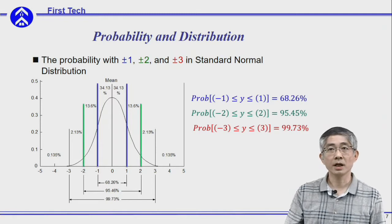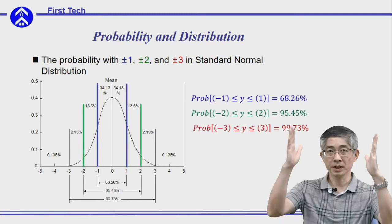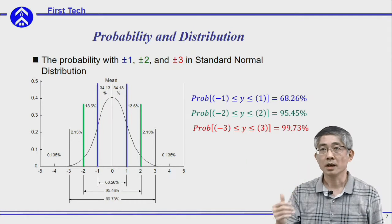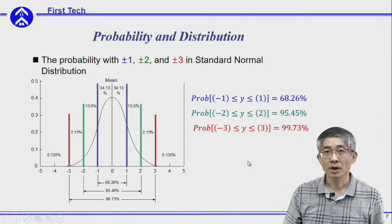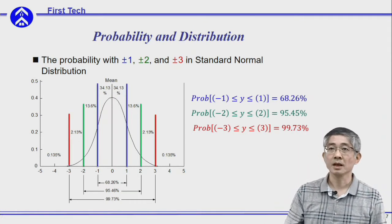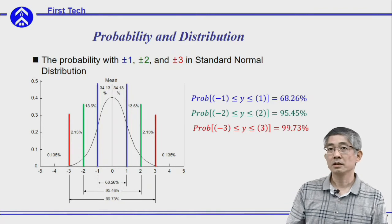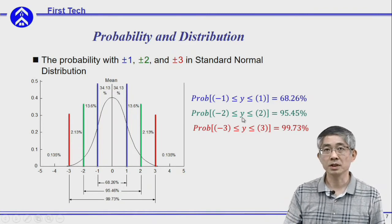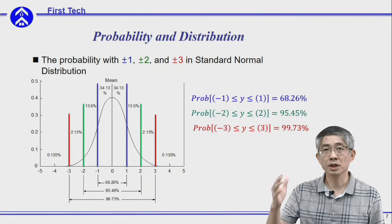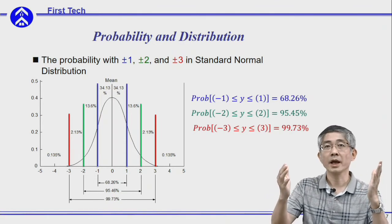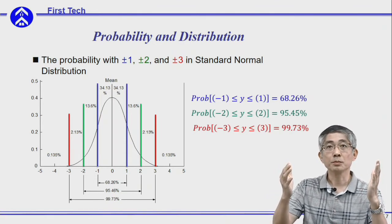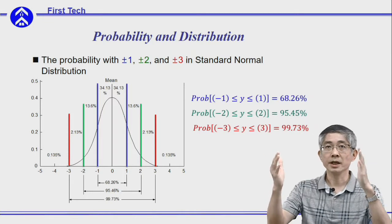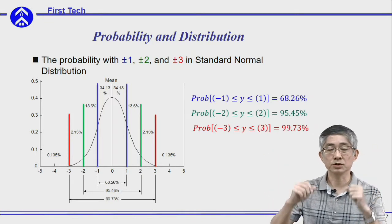Similarly, if you want to find the probability within 2 and minus 2, and 3 and minus 3, you can use the same method. Here, 1 stands for the standard deviation. The probability for y between 2 and minus 2 is actually the probability between 2 times the standard deviation and minus 2 times the standard deviation.